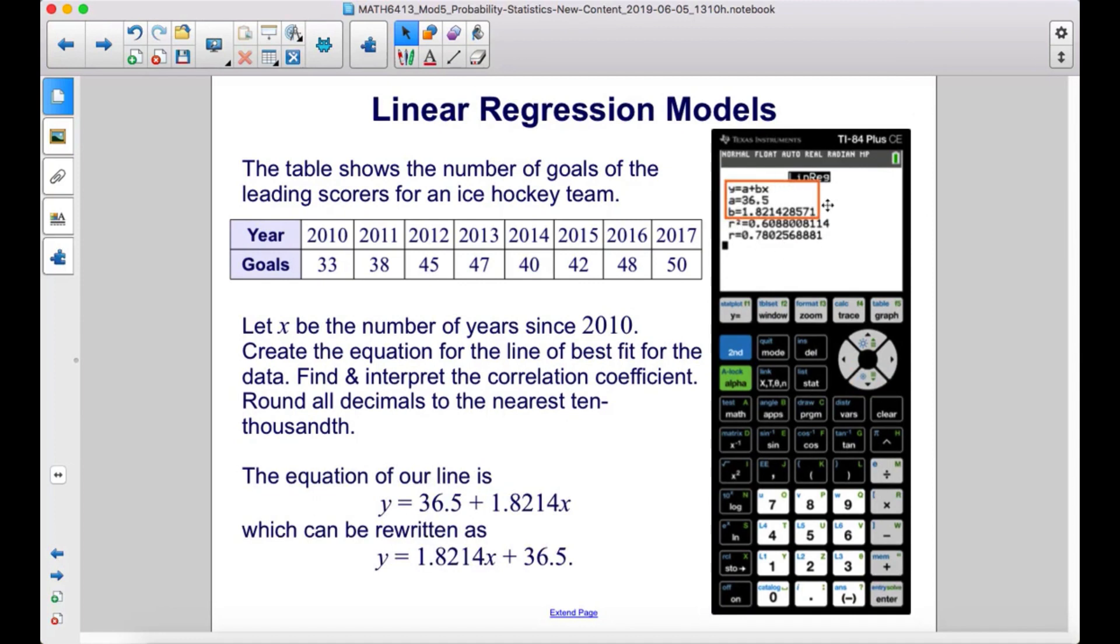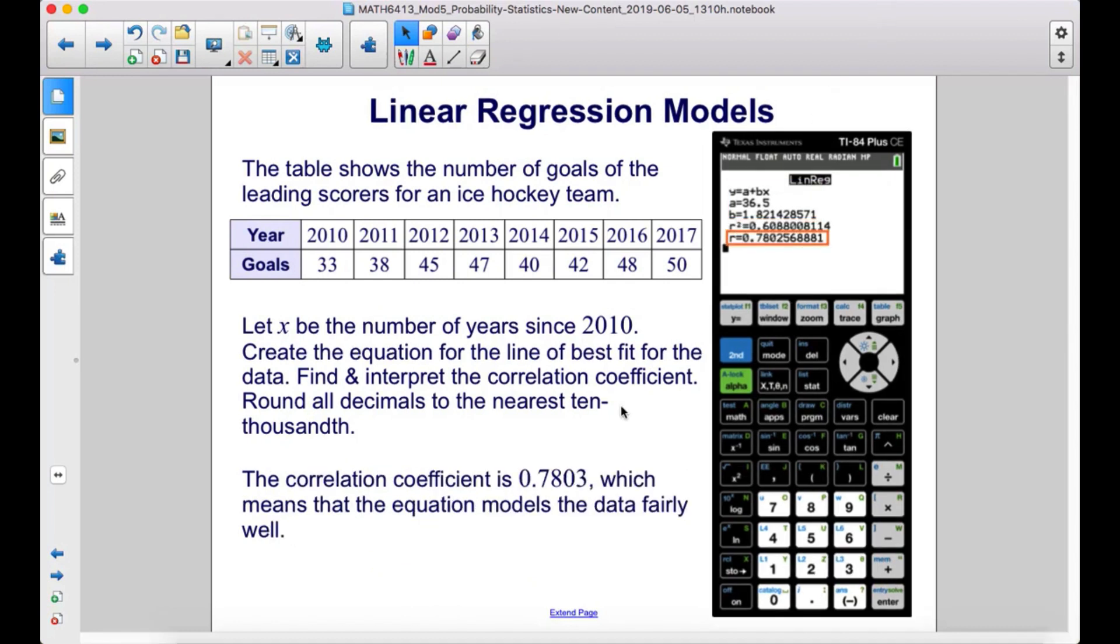The equation of our line is y = 36.5 + 1.8214x, which can be rewritten as y = 1.8214x + 36.5. The correlation coefficient is 0.7803, which means that the equation models the data fairly well.